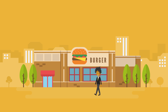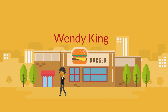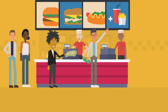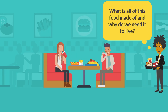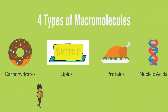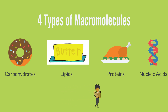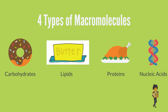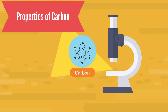Say you are super hungry and want to get something to eat from your favorite burger place. You go in and see all these different foods to choose from — hamburgers, hot dogs, sub sandwiches, french fries and so much more. In your big curious mind you look around and see everyone eating and drinking and begin to think, what is all this food made of and why do we need it to live? All of the foods we eat are made out of four different types of macromolecules: carbohydrates, lipids, proteins, and nucleic acids. Let's take a look at what they all have in common — carbon.